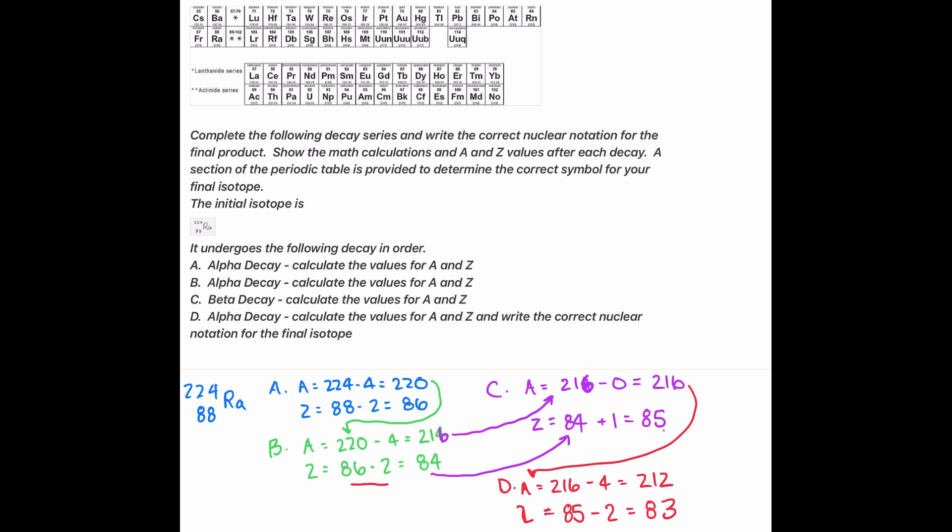So our final answer will be 212 over 83. Now we're going to look in our periodic table for 83, and that's Bi.